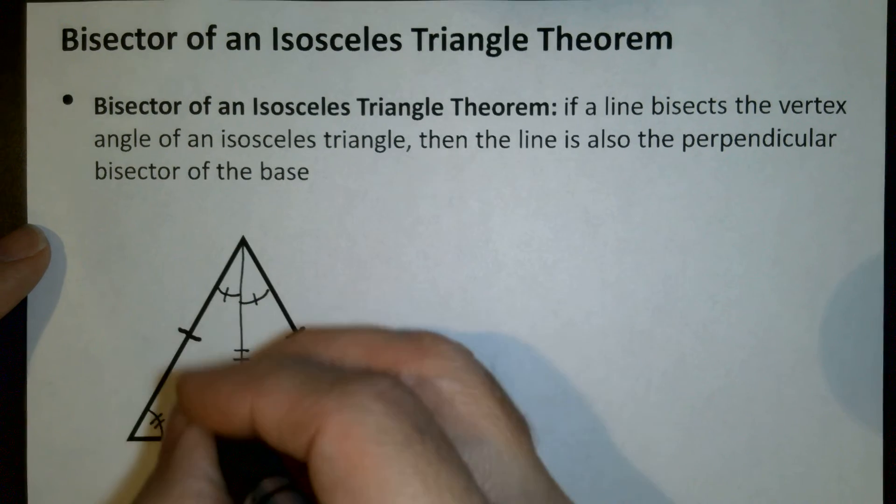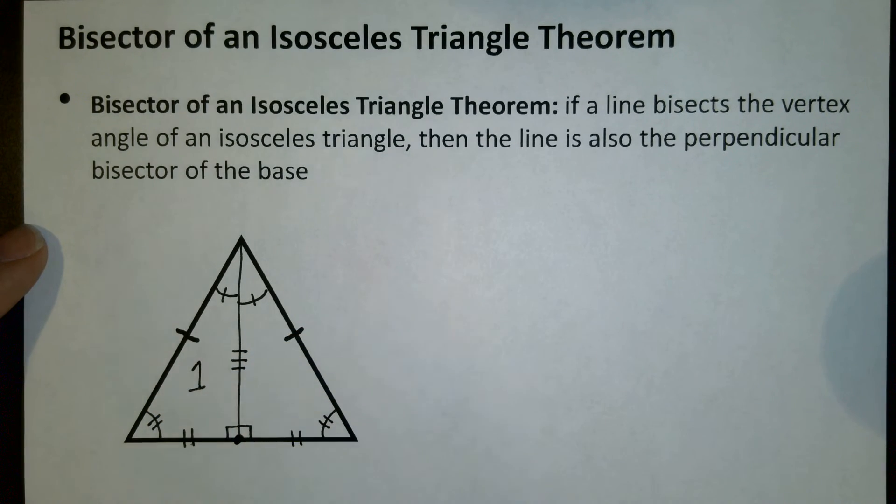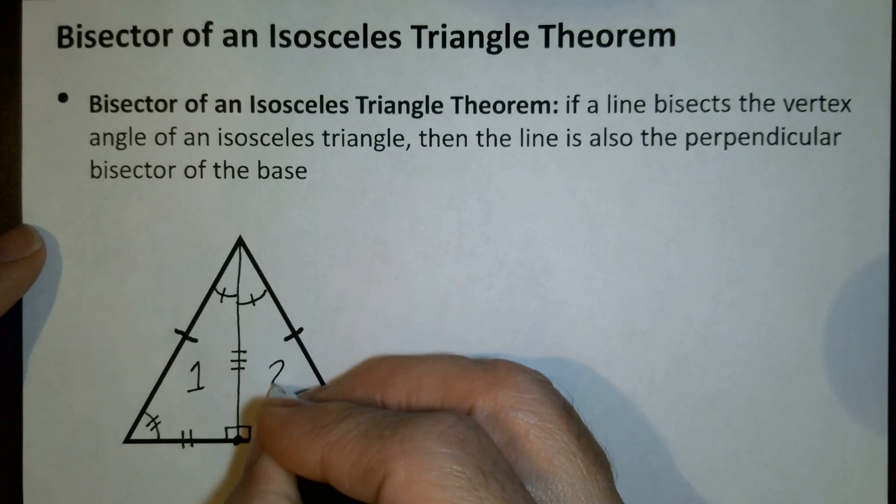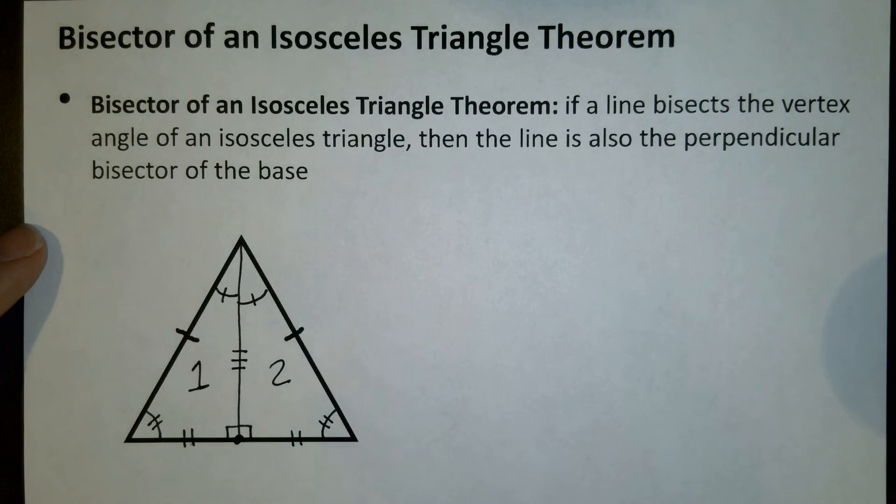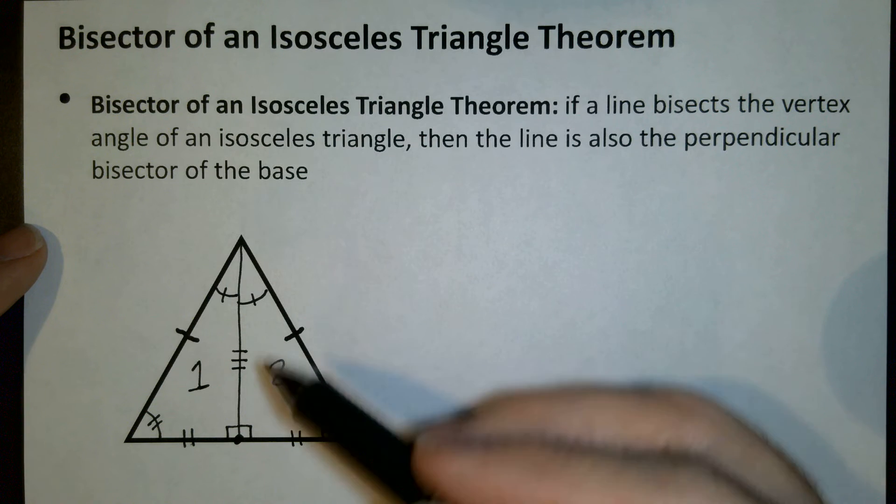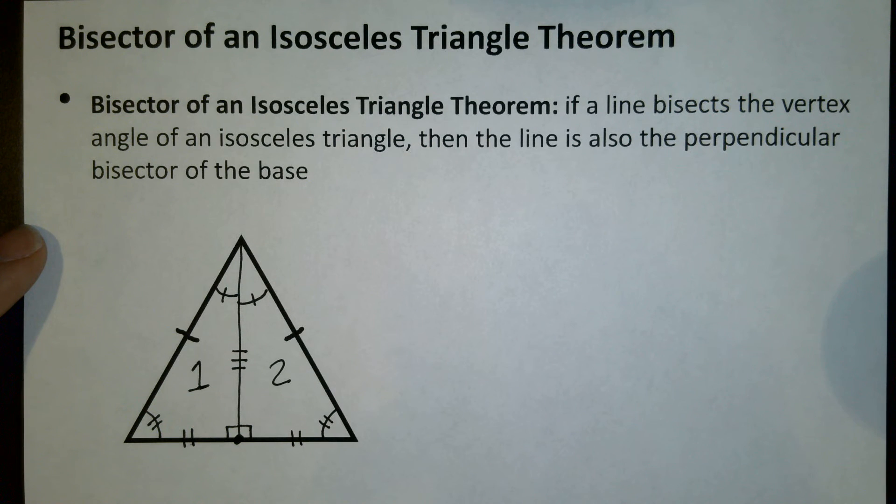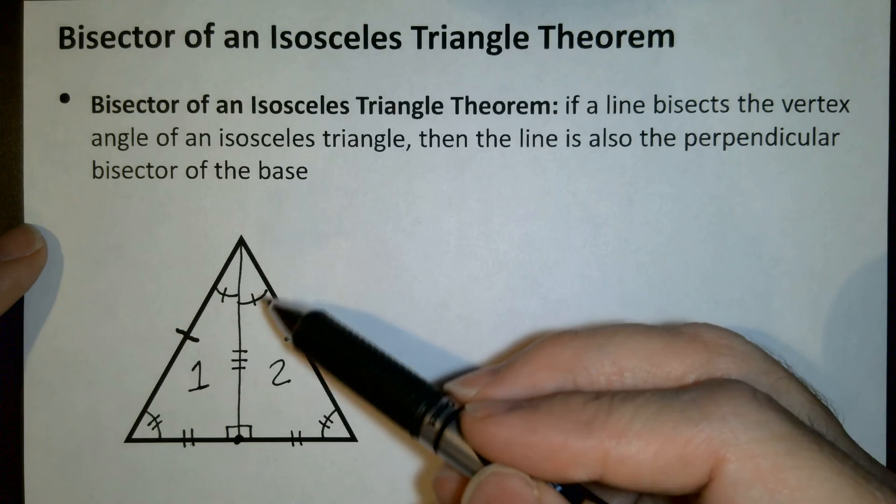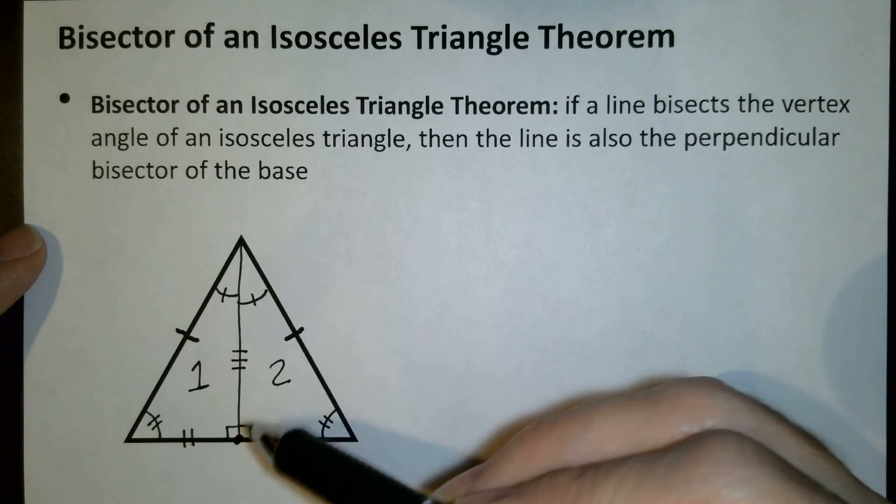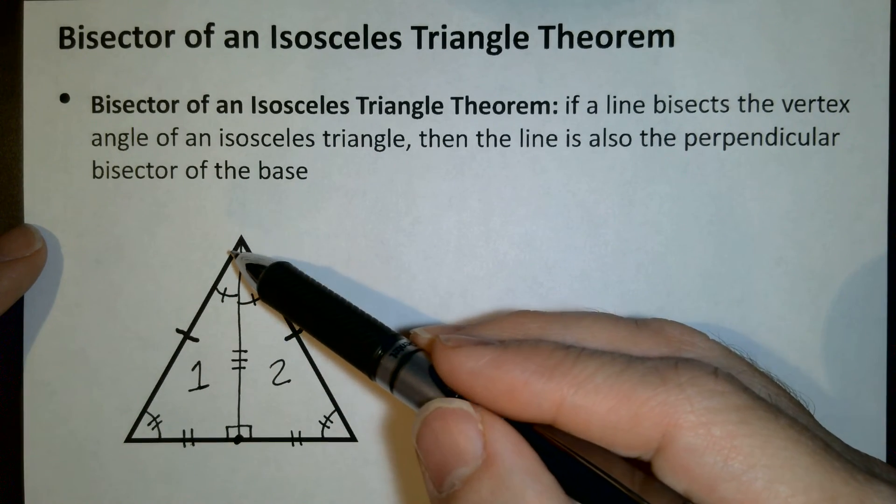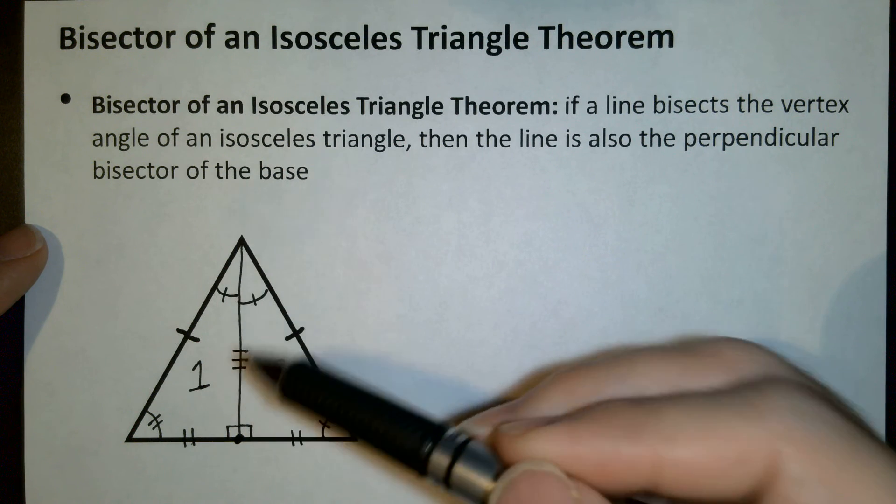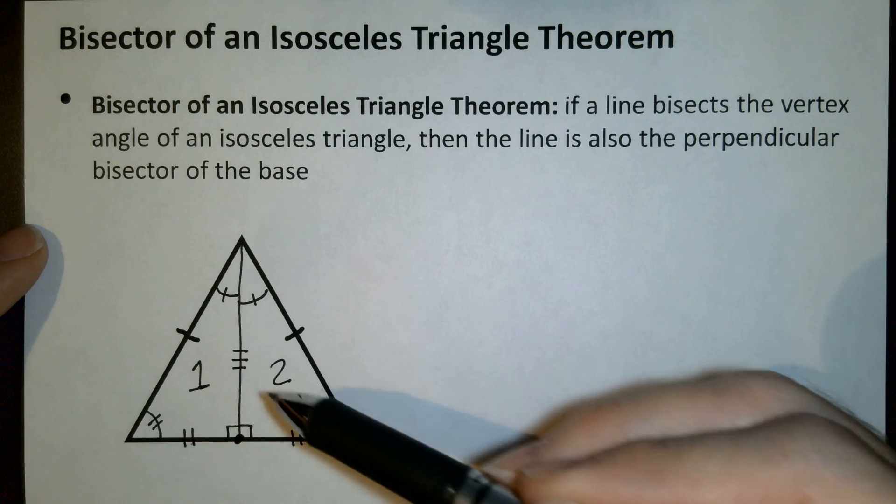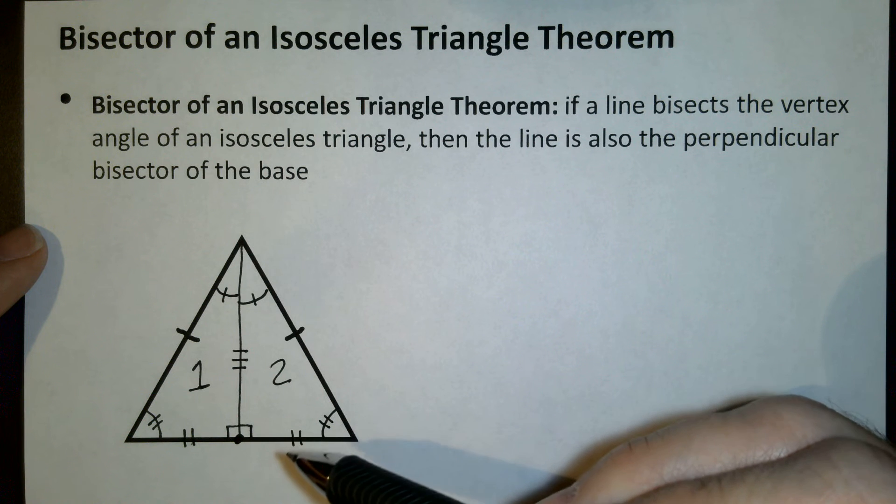And so it turns out that this, I'll call it triangle one on this side and triangle two on this side, those are congruent triangles. They have all the parts with corresponding parts in the other triangle. So that's what happens when you have an isosceles triangle that has the vertex angle that gets bisected. You end up actually creating two smaller right triangles that are congruent to one another.